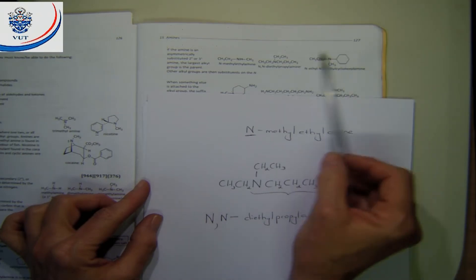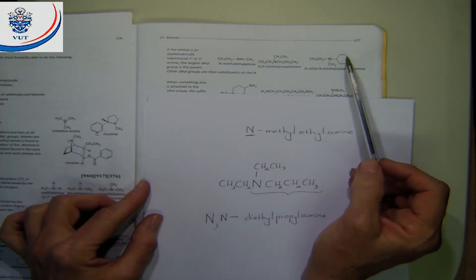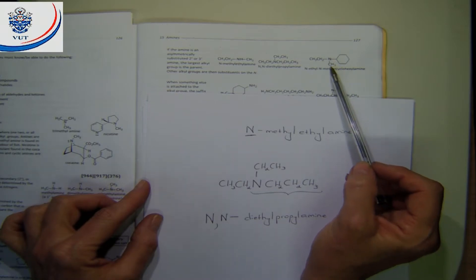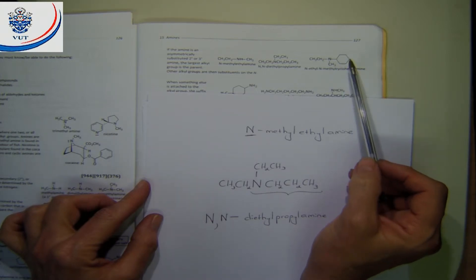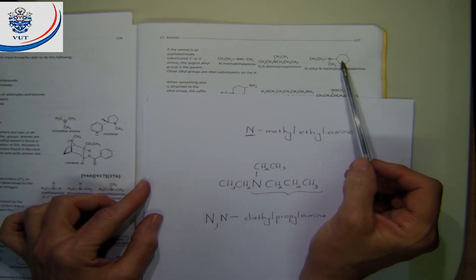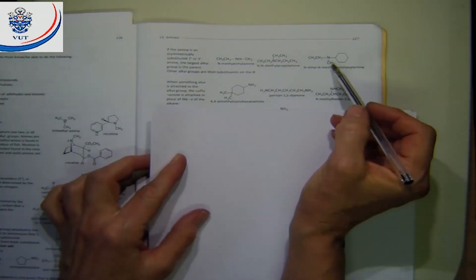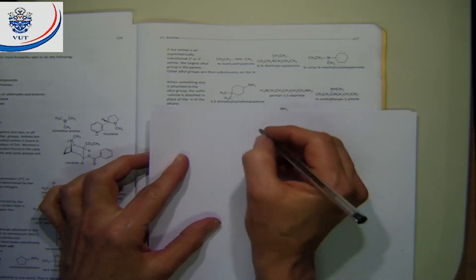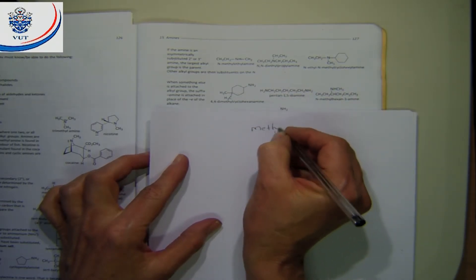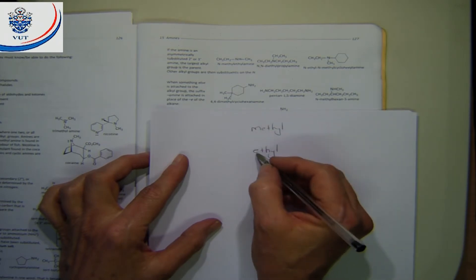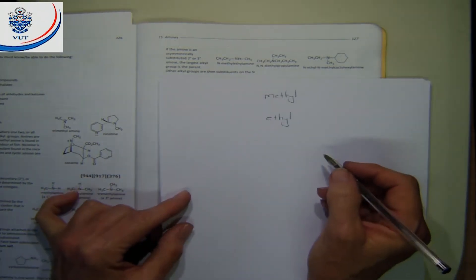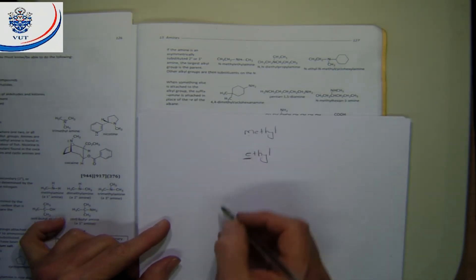In this next example, you have three different groups on the nitrogen, so it is a tertiary amine. We have one carbon, two carbons, and a cyclohexane ring with six carbons. The cyclohexane ring will be the parent because it has the most carbons. Now if you name it, you have a methyl group and an ethyl group attached to the nitrogen. Looking at them in alphabetical order, ethyl should come first.